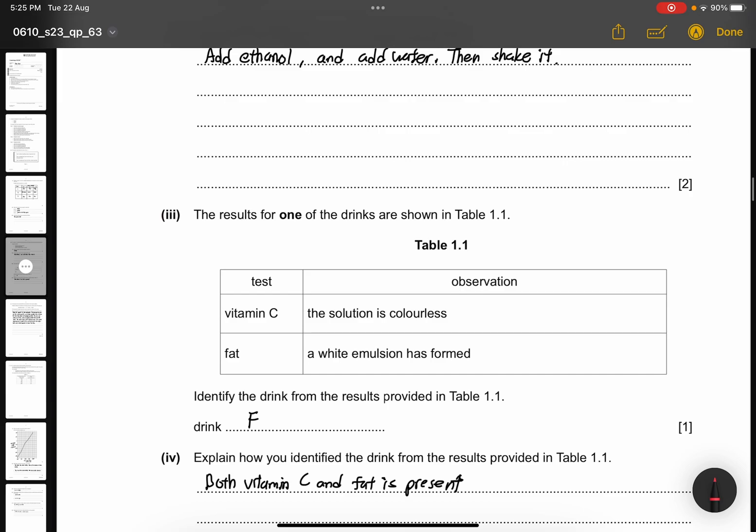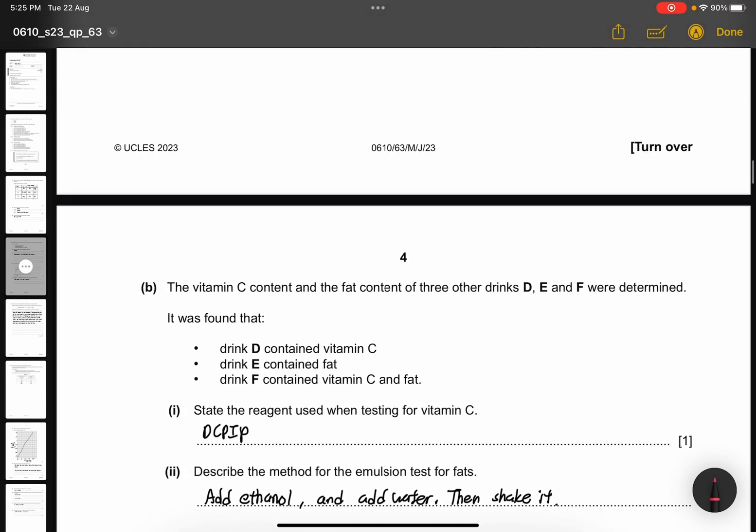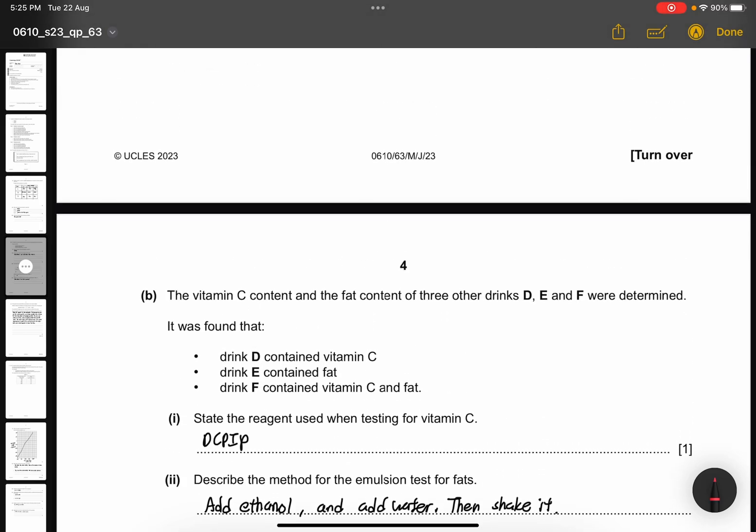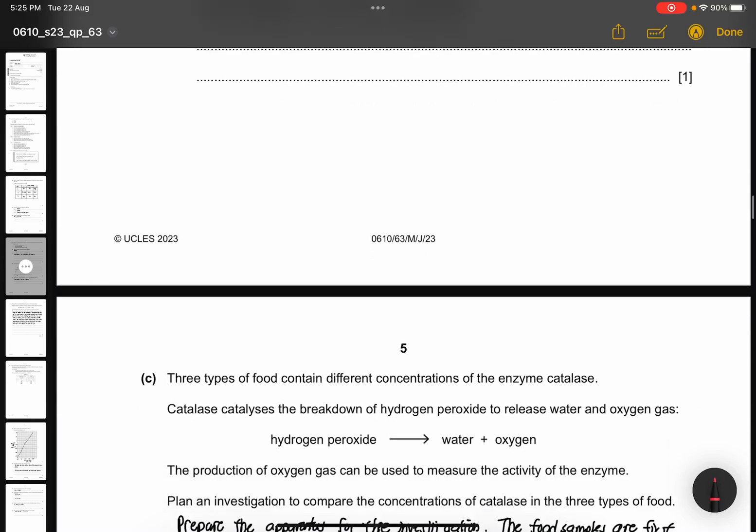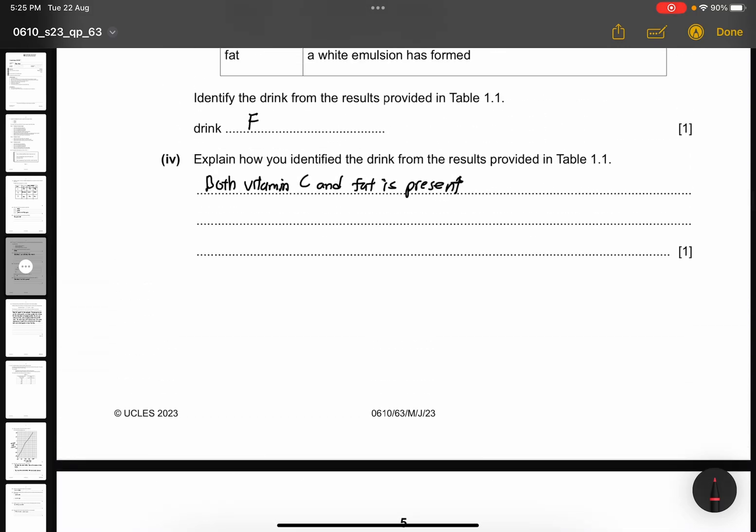Part 3, the results for one of the drinks are shown in table 1.1. So you can see test vitamin C, the solution is colorless; fat, a white emulsion has formed. Identify the drink from the results provided in table 1.1, which is drink F because both vitamin C and fat are both present. Explain how you identified the drink from the results provided in table 1.1. Very free, it's free marks, so both vitamin C and fat are present in the drink.